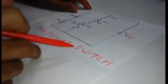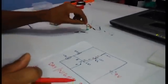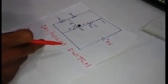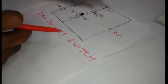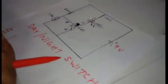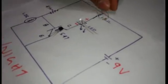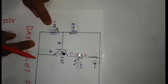So this is the circuit for the day night switch. The components we need are: the transistor BC547, an LED — which means light emitting diode — a 1K resistor, a 47K resistor — that is 47 kiloohms — and the LDR, which means light dependent resistor.